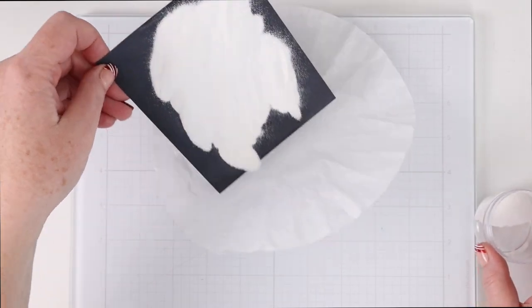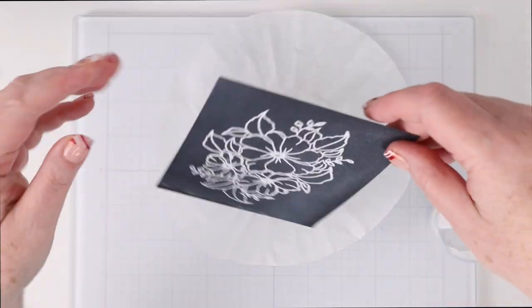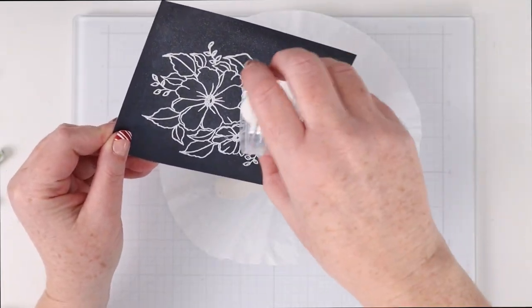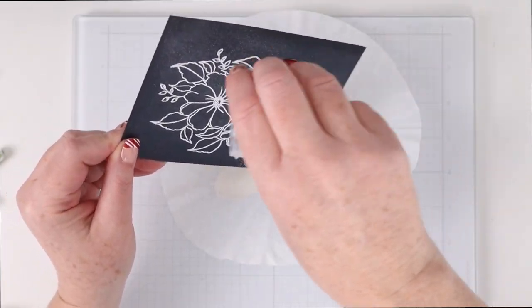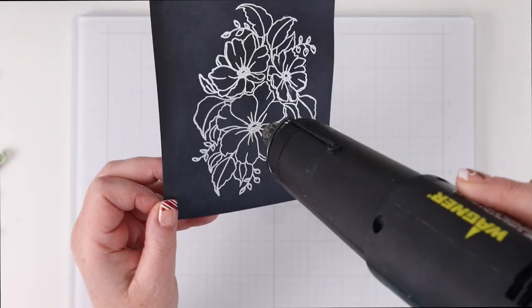So I am going to add some white embossing powder to my sticky embossing ink and tap off the excess. Of course I used my rabbit hole designs embossing tool to really make sure that the embossing powder only sticks exactly where I want it which is the stamped image.